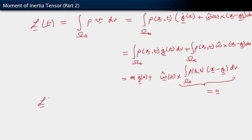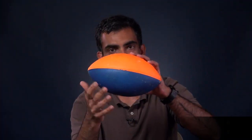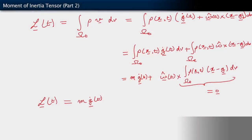So what we are seeing here is that the linear momentum of a continuum body undergoing rigid motion is essentially the mass of the body times the velocity of the center of mass. As far as linear momentum is concerned, this rigid body, even though it has mass distributed, is essentially acting as a particle. This is our result for linear momentum.